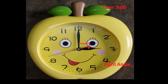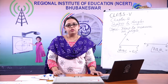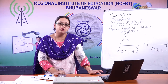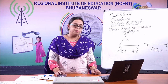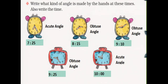You can have fun with any wall clock — check the time and check the angle. In your book, there is a page with pictures of clocks making certain angles. You must write the time and the type of angle the clock hands are making. The answers: first is 7:25, acute angle; second is 8:15, obtuse angle; third is also obtuse angle; fourth is 9:25, obtuse angle; and the last one is 10 o'clock, acute angle.